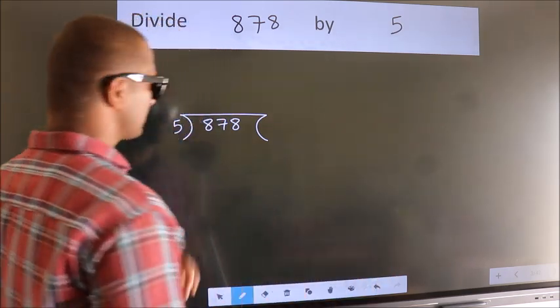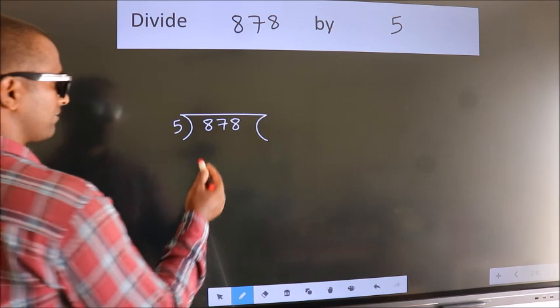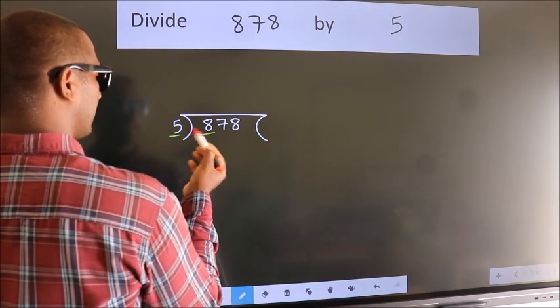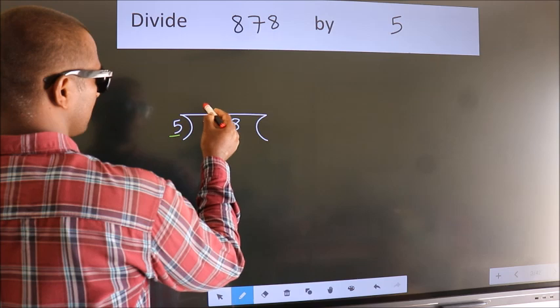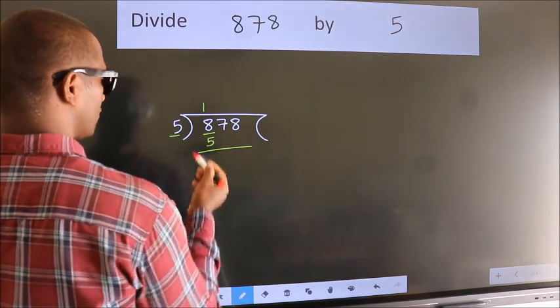This is step 1. Next, here we have 8, here 5. A number close to 8 in the 5 table is 5 once, which is 5. Now we should subtract.